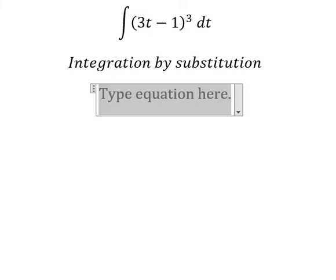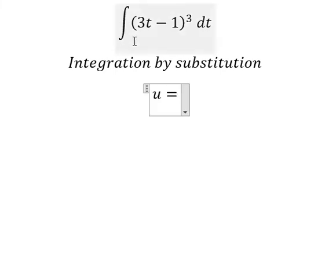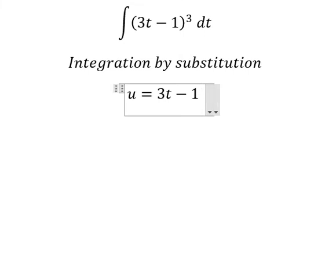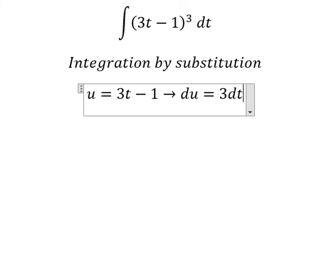So I will put u equals to this one. Next, we do first derivative for both sides. Because we don't have number 3 in here, so we divide both sides by number 3.